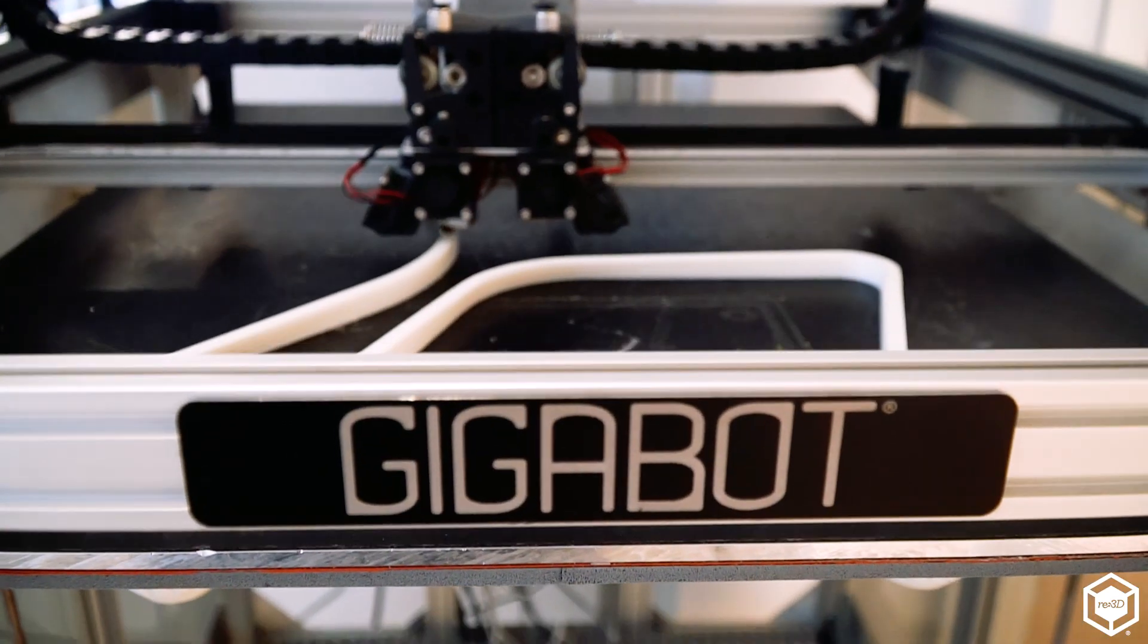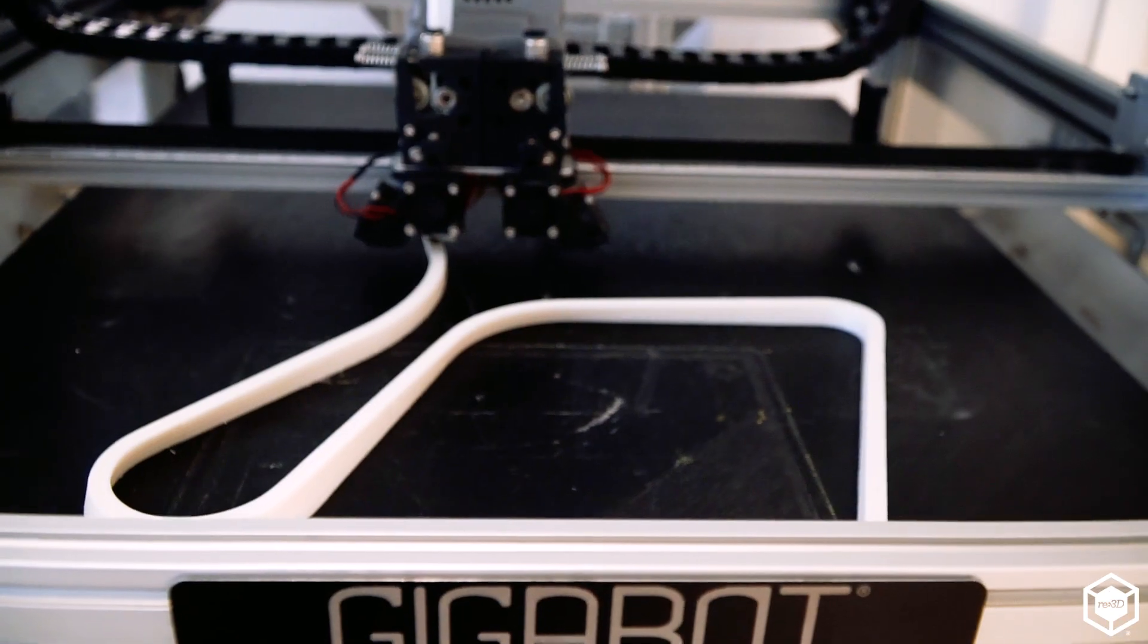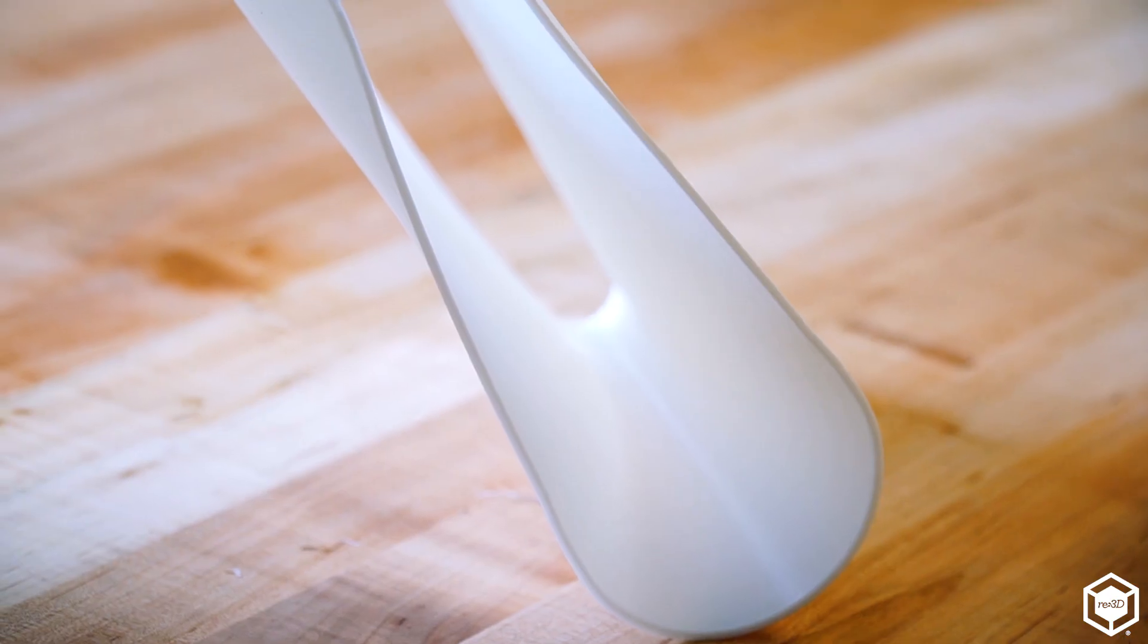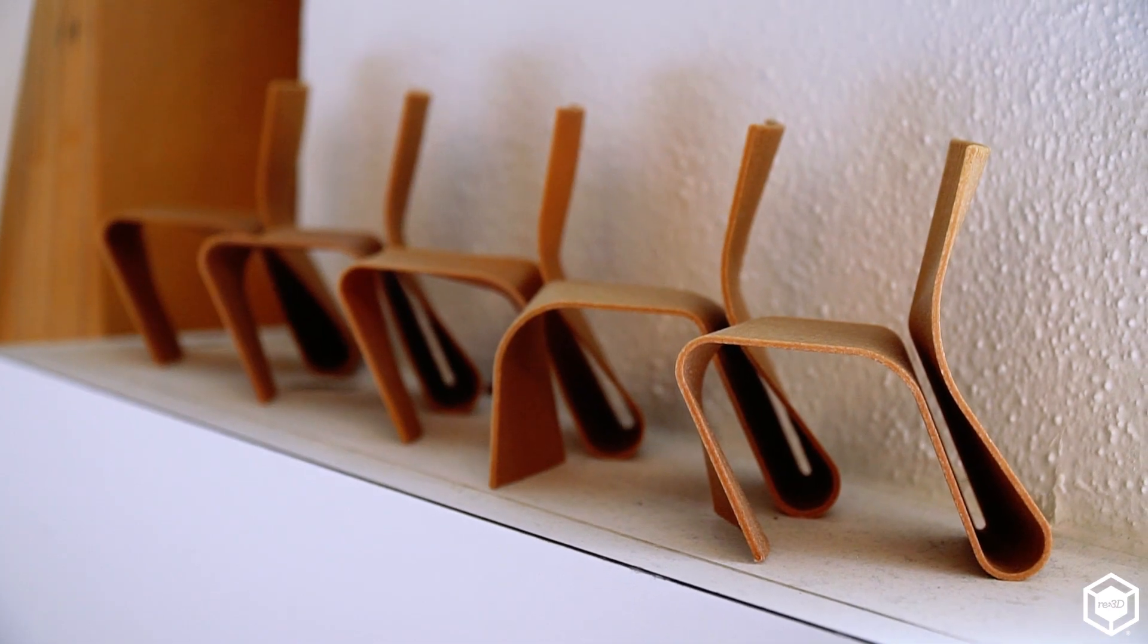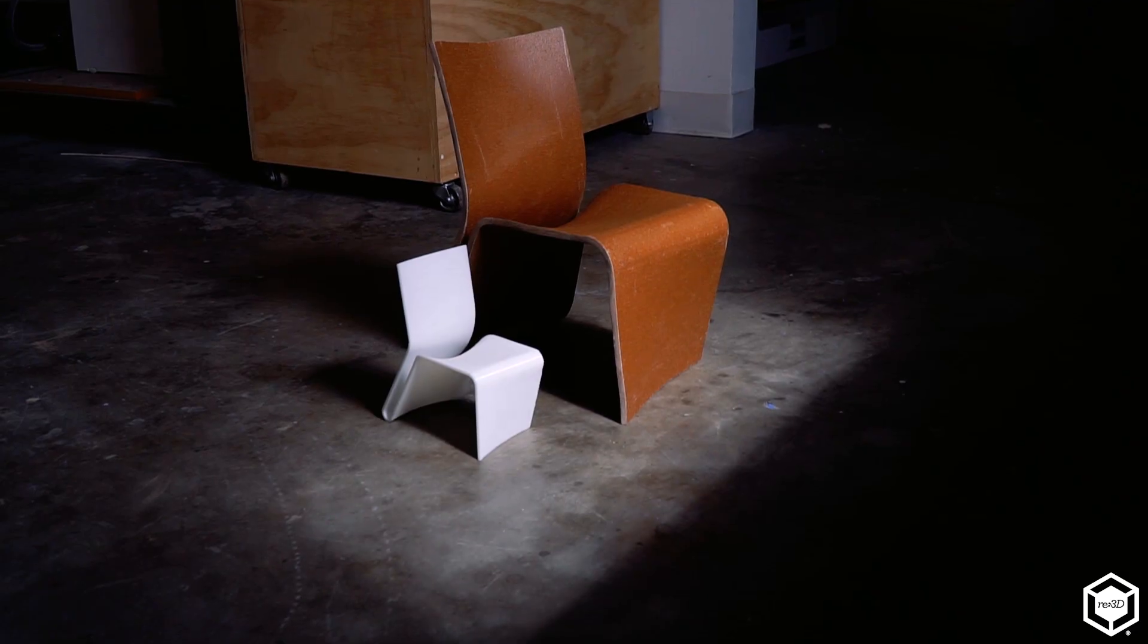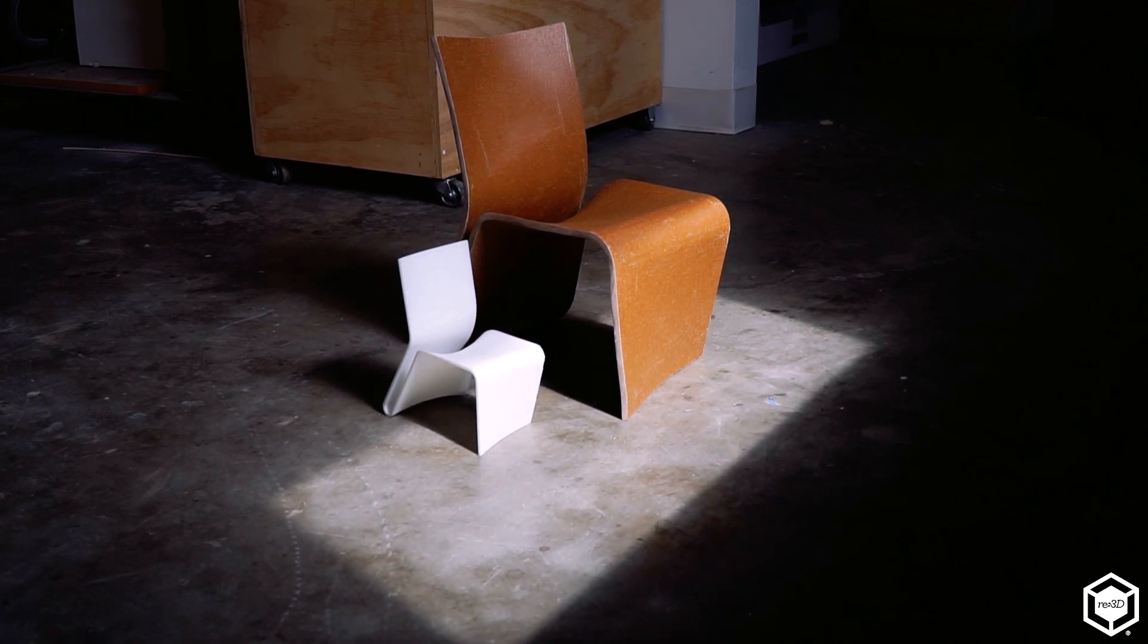As we were manipulating the geometry and curvature of the chair, the Gigabot allowed us to produce quick iterative prototypes of how the chair might look that we could evaluate for its aesthetic qualities but also its performative qualities. We built a number of small-scale mockups all the way up to a half-scale version of the chair on the Gigabot.